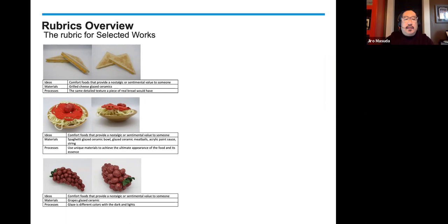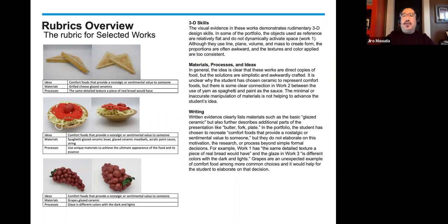Under process: same texture and detail texture a piece of real bread would have. In the second image, using unique materials to achieve the ultimate appearance of food and its essence. In the third one, glaze in different colors with darks and lights. In terms of 3D skills, this is demonstrating rudimentary 3D design skills. Most of the pieces are relatively flat and don't actively engage with three-dimensional space — that concept of occupied and unoccupied space — which is really important for the 3D portfolio.